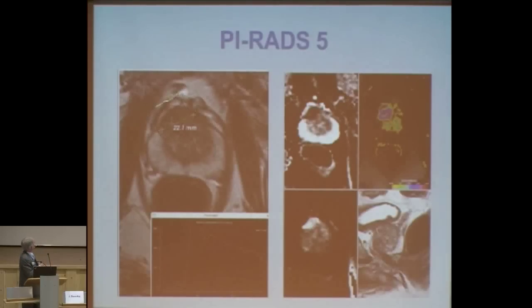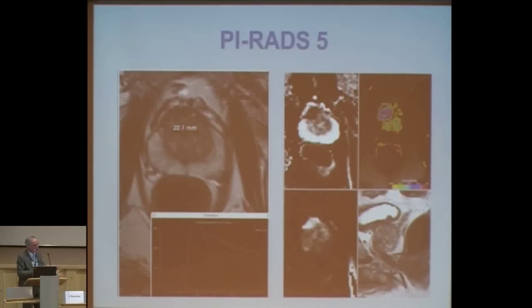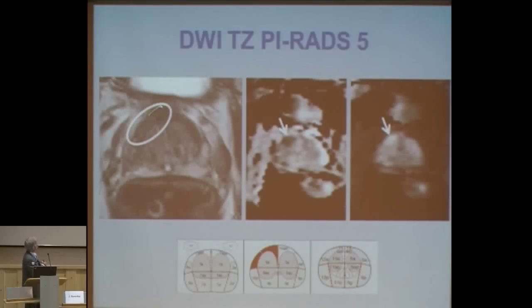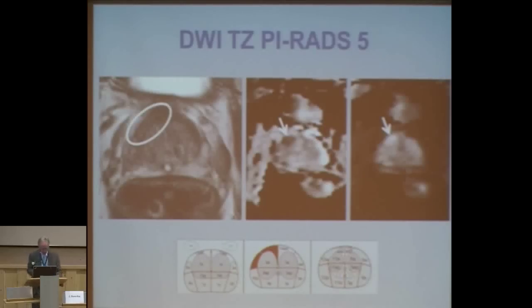This is a lesion anteriorly located. It has an erased charcoal appearance — black and white on diffusion — plus pathologic enhancement. It gets five points; this is surely an aggressive anterior tumor. A more subtle tumor: with circles drawn around it, you can see something going on, also black and white — also PI-RADS 5. Confirmed by histopathology as a Gleason 4+3 anteriorly located small tumor.